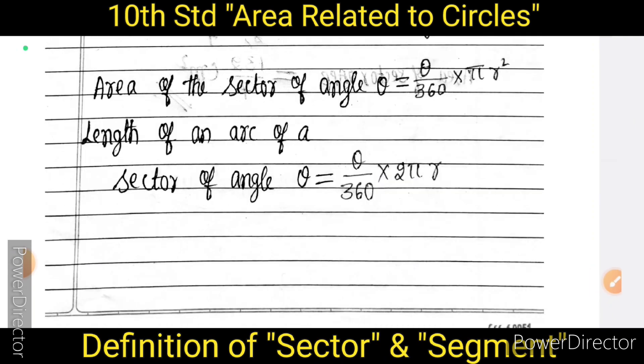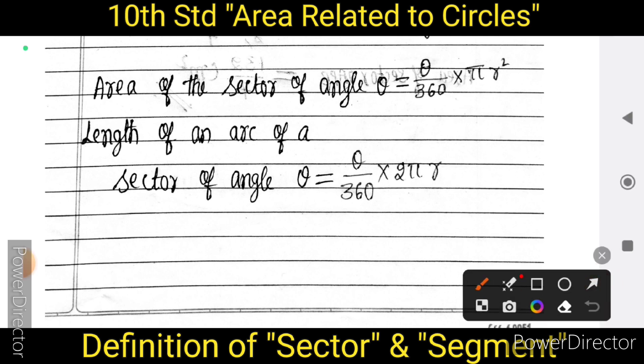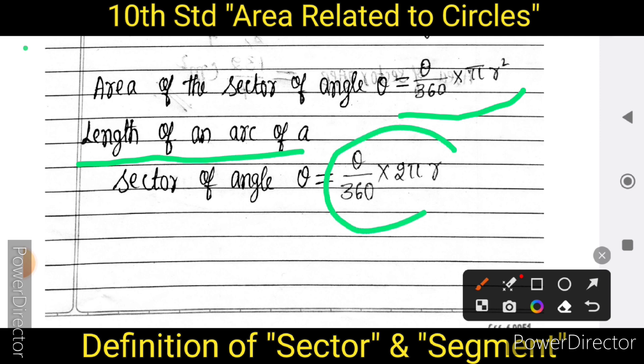The formula for the area of a sector of angle theta is equal to theta by 360 into pi r squared. Next, the length of the corresponding arc: the formula is theta by 360 into 2 pi r. These relate to the full circle area pi r squared and circumference 2 pi r respectively.